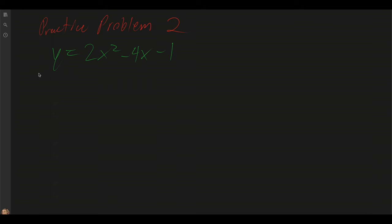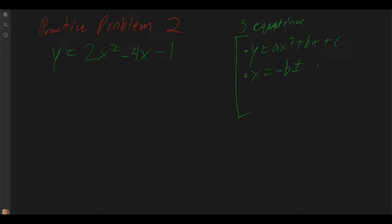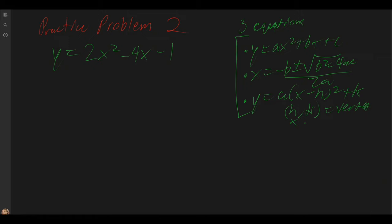Now let's go over a second practice problem. We are given the quadratic equation y is equal to 2x squared minus 4x minus 1. In quadratic equations, there are three equations we rely on: y equals ax squared plus bx plus c; x equals negative b plus or minus the square root of b squared minus 4ac, all over 2a; and the vertex form, y equals a times x minus h squared plus k, where h and k are denoted as the vertex. H is referred to as the x-coordinate of the vertex, and k is the y-coordinate of the vertex.